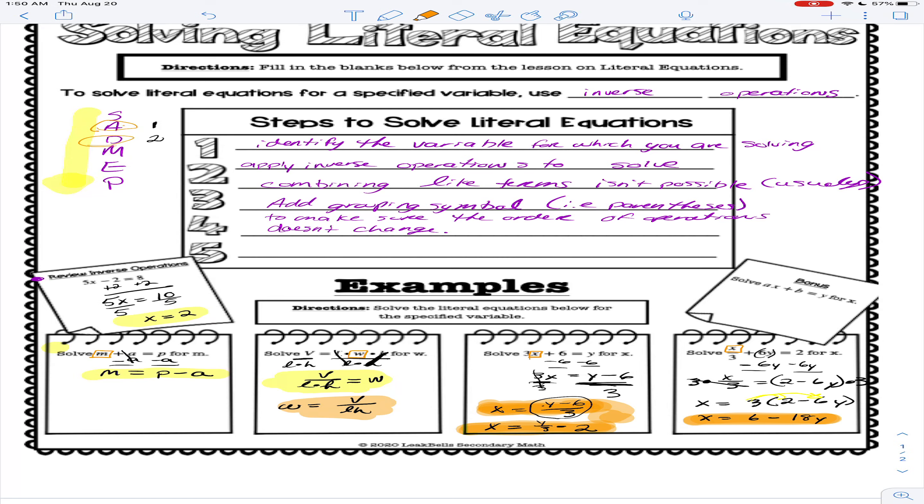Our final example is all letters. Isn't that fun? So let's work on it. It says in this bonus, my apologies, it says solve ax plus b equals y for x. We're going to identify the x and we're going to solve for it. But first we need to note what operations do we see. We see addition and we see multiplication.